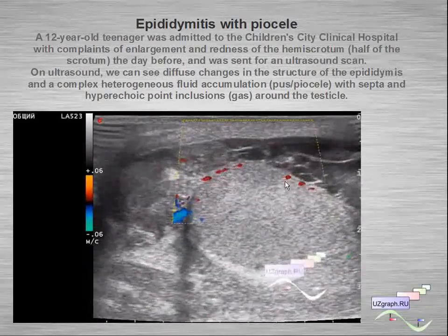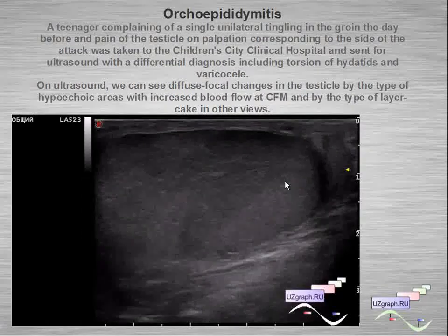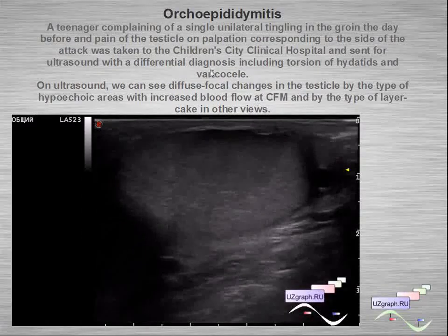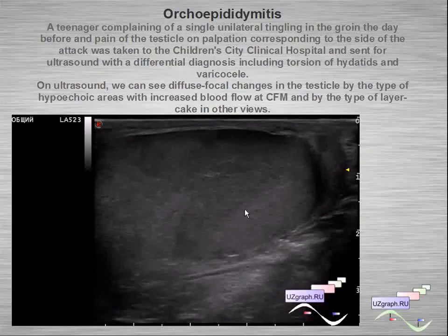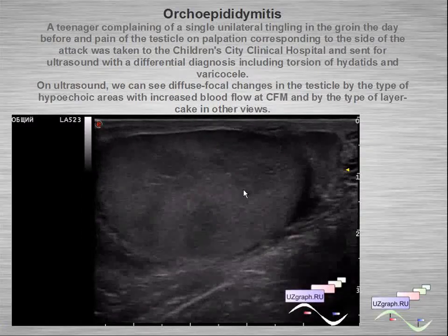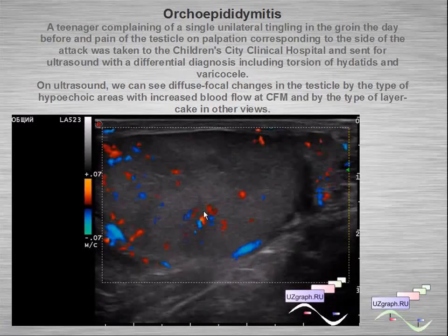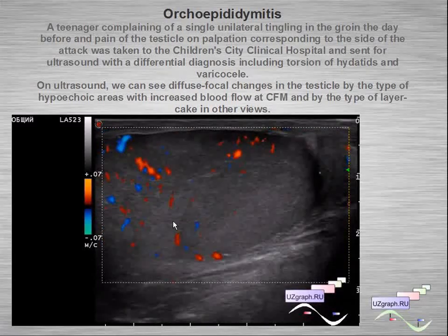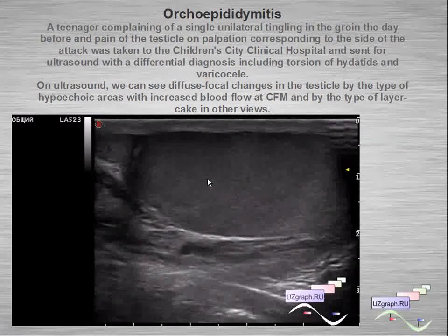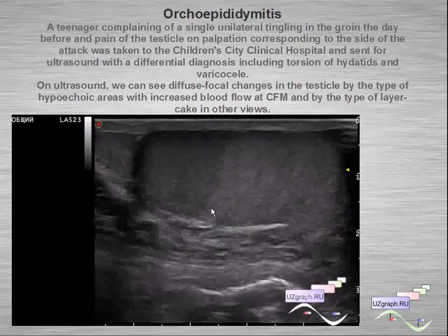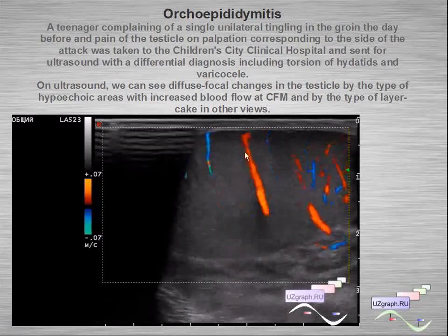In other examples of orchido-epididymitis, there is a hypoechoic area with increased blood flow at color flow mode. In some planes it looks like a layer cake.